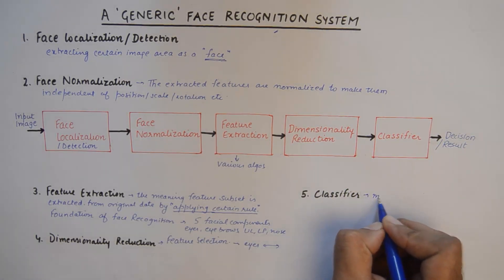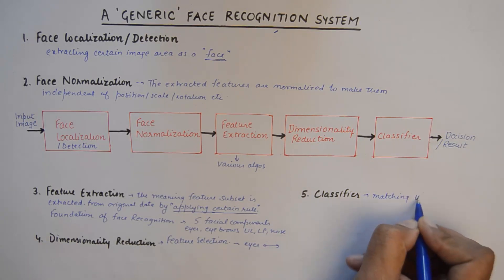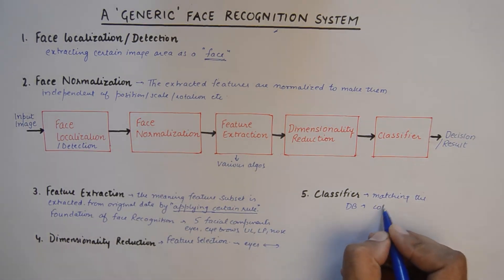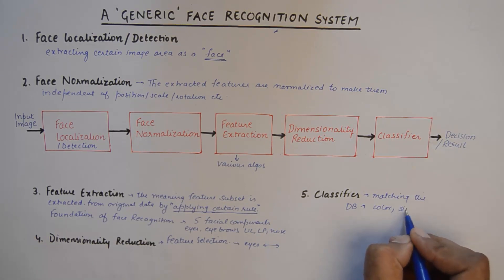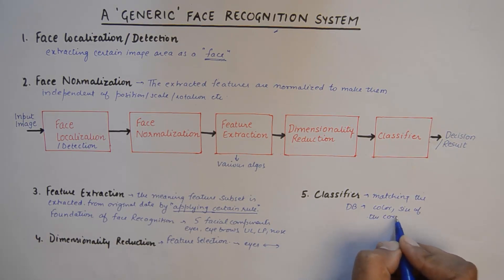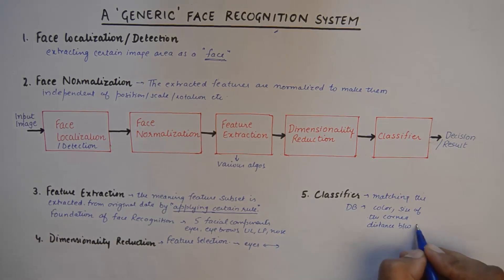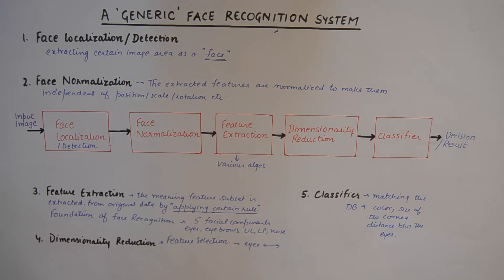The classifier does the job of matching against the database. For example, we have selected the eyes, and we know the color of the eye, the size of the cornea, and the distance between the eyes. That information will be matched with the database of all registered users the system has, and a decision is made based on that — whether the person is a registered user, whether he is an employee, or whether he has had his face scanned before.